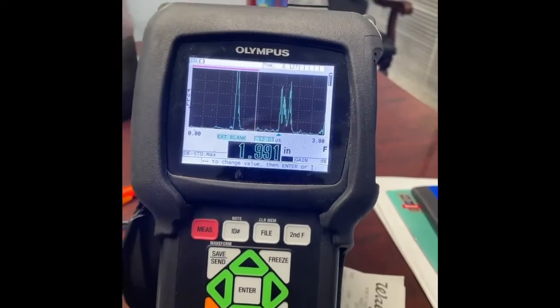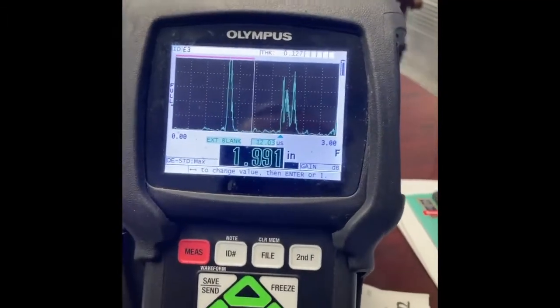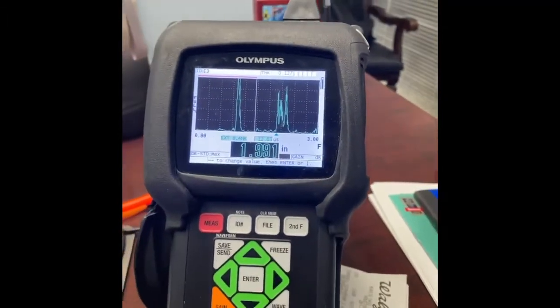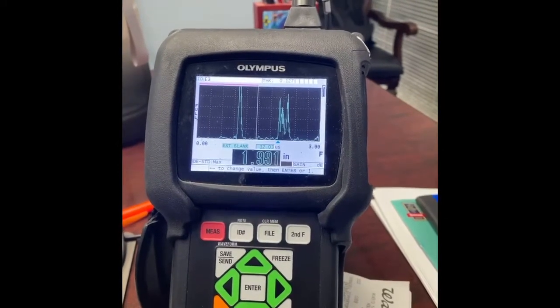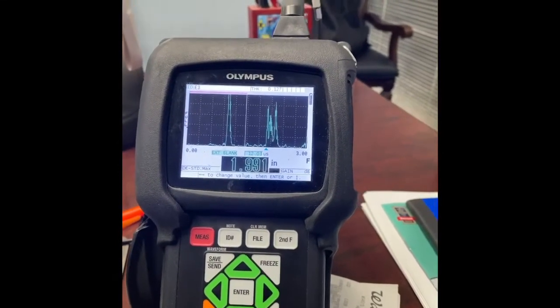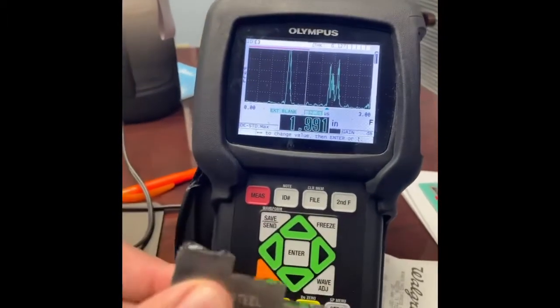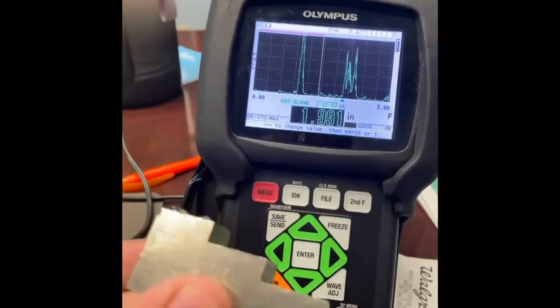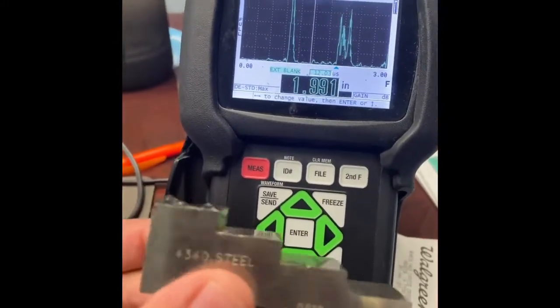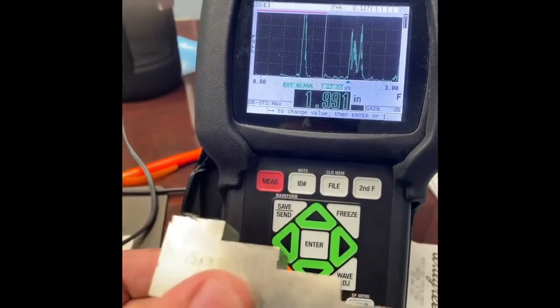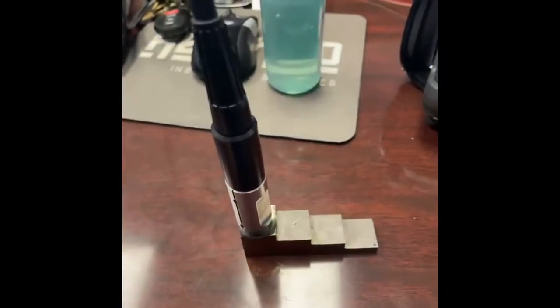The reason why this is important for a technician to know is in the event he's in a bind and if it's permitted by his procedure, to perform a thickness inspection and he doesn't have the right size thickness. Again, you should always consult your procedure to see that if you are actually allowed to do what I'm getting ready to show.